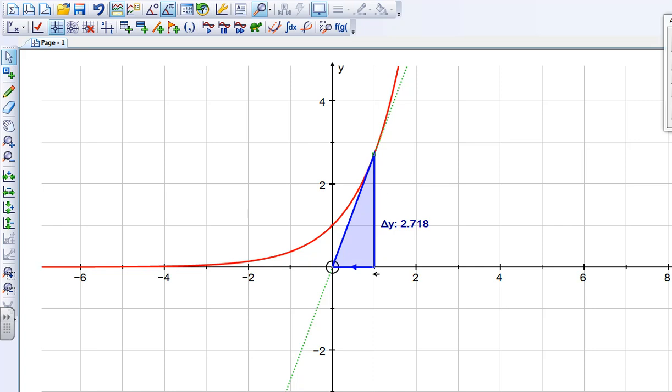and delta y, the vertical component, will change as we move along the x-axis. And we can also see that the vertical component here, our delta y, is exactly the same as the y-coordinate of e to the x.